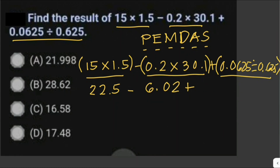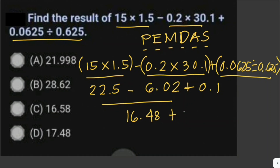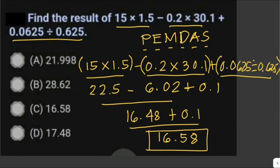0.2 times 30.1 is equal to 6.02, plus 0.0625 divided by 0.625, which is equal to 0.1. Now we can perform the addition and subtraction from left to right. That would be 22.5 minus 6.02, which equals 16.48, plus 0.1, which equals 16.58. So this is our answer — letter C.